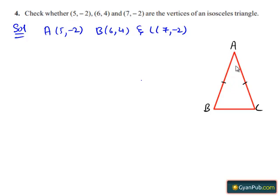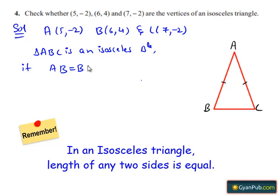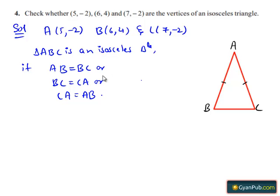We know that three non-collinear points will represent the vertices of an isosceles triangle if its two sides are of equal length. That is, triangle ABC is an isosceles triangle if AB equals BC, or BC equals CA, or CA equals AB. For checking whether the points represent the vertices of an isosceles triangle or not, we need to find the distances AB, BC, and CA.